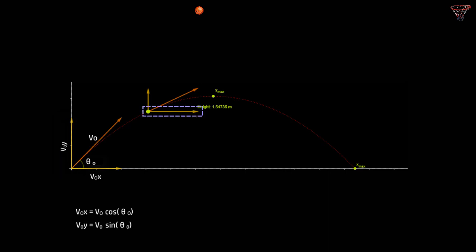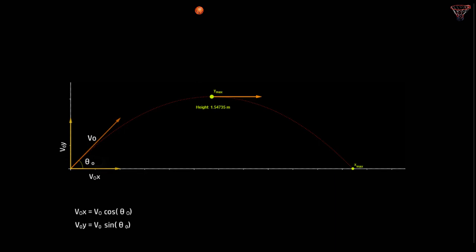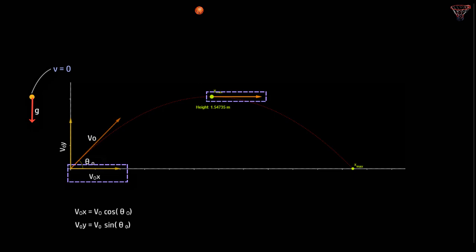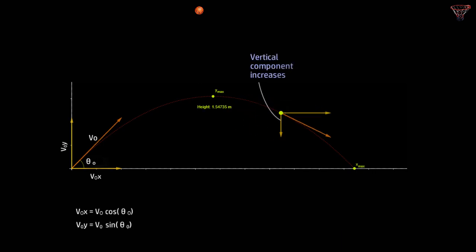However, the horizontal component vₓ remains the same as at launch, because there is no horizontal force. When the projectile reaches its maximum height, the vertical component of velocity is zero — no surprise, since any object thrown up attains zero velocity at maximum height — and the horizontal component is again unchanged. As the projectile descends, the vertical component increases in magnitude but now points downward, similar to a ball thrown vertically up gaining speed on its way back. The horizontal component remains unchanged.